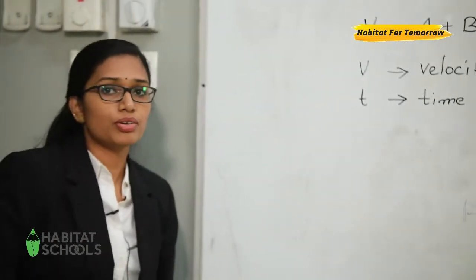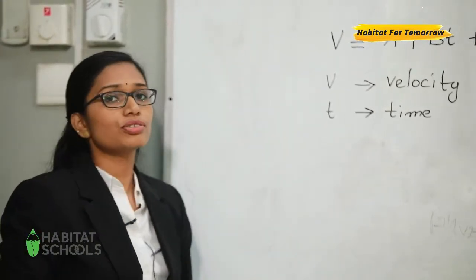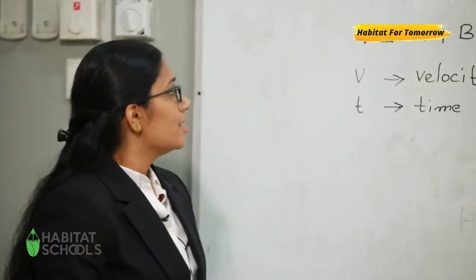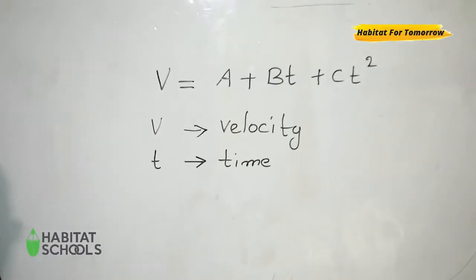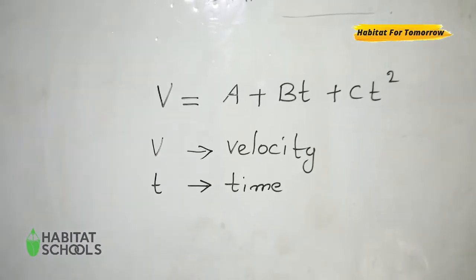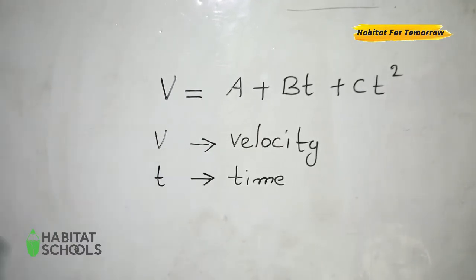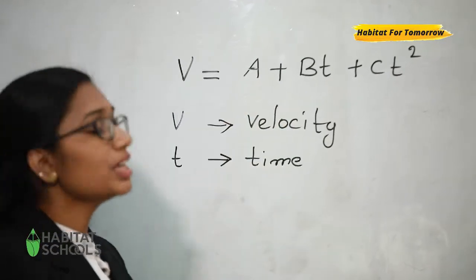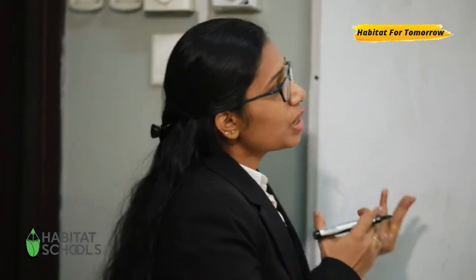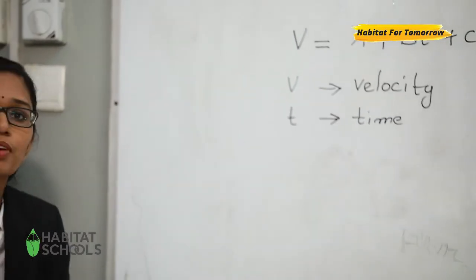So, let us see how we can use dimensional analysis for this. We had learned already about the principle of homogeneity. According to the principle of homogeneity, the left hand side and the right hand side of the equation should have the same dimension. Which means, as per the equation, on my left hand side I have velocity, and on my right hand side it is a combination of three terms.